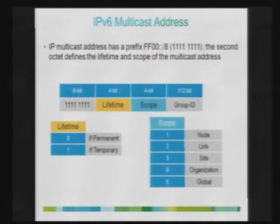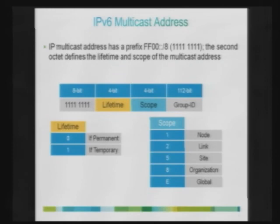Let's look at different scopes available with IPv6 multicast addresses. The first eight bits — all ones — represent an IPv6 multicast address, which is FF. Then you have a 4-bit lifetime and a 4-bit scope. The lifetime can be permanent (value 0) or temporary (value 1).